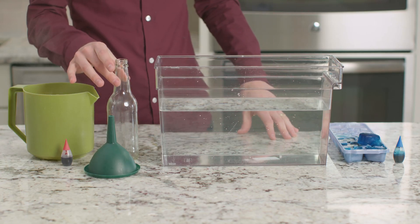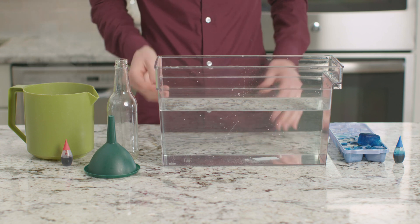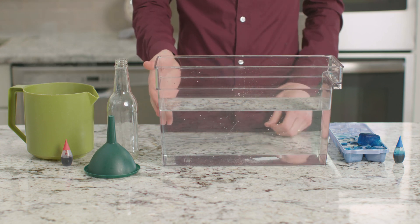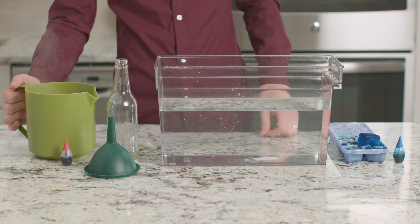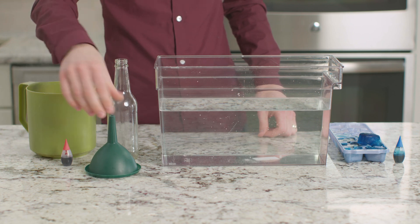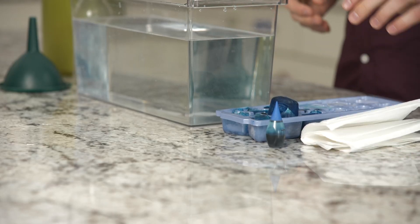For this experiment we need a small bottle with a narrow opening, a large clear container filled with water, boiling water, a funnel, red and blue food coloring, a napkin, and an ice cube tray.